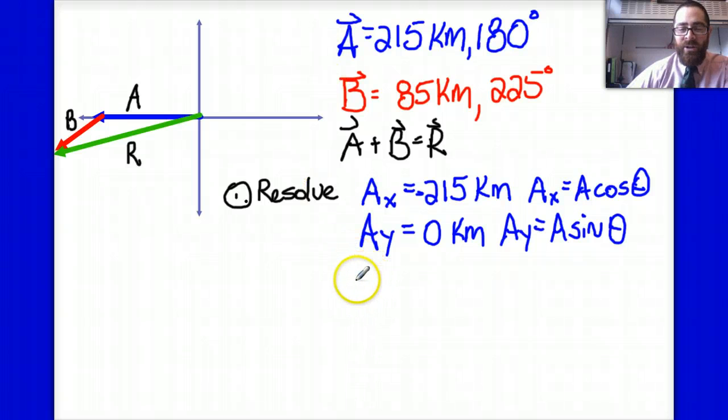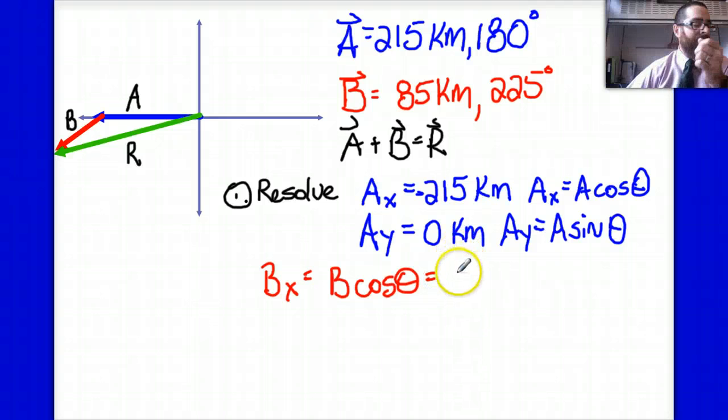Part B is a little bit tougher because we should recognize that B has both horizontal and vertical components. So I'll start with the horizontal component, and I'm going to say that B cosine theta is equal to the x component. When I plug that into my calculator, I end up getting 60.1 kilometers.